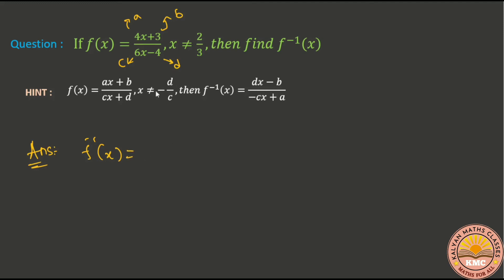So applying the shortcut: a and d interchange. d value is minus 4, so we get minus 4x. The b value sign changes: plus 3 becomes minus 3. The c value sign changes: plus 6x becomes minus 6x. And d's place takes a value of 4. So the denominator is minus 6x plus 4.